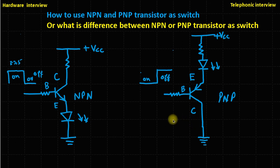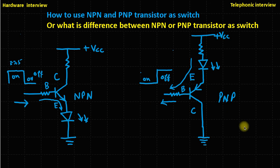In the NPN transistor, base current always flows from outside to inside — from base to emitter. But in the PNP transistor, the current always comes out from the base. So if you connect the load at the collector of the PNP transistor, base current will not flow through the load.